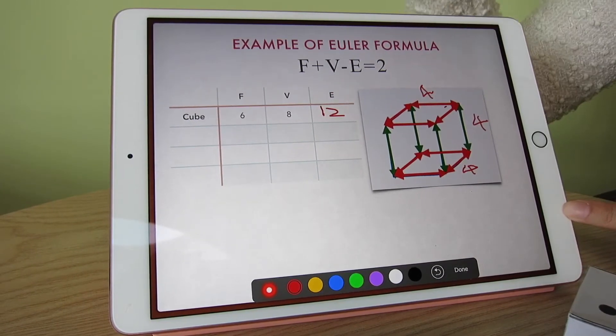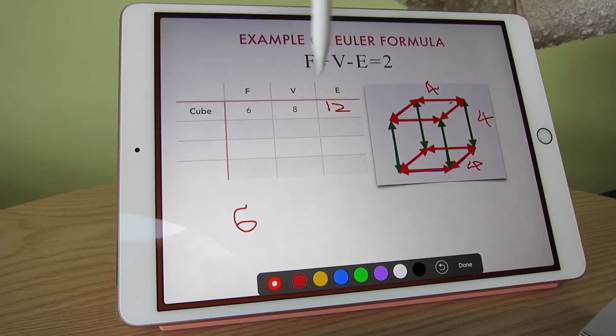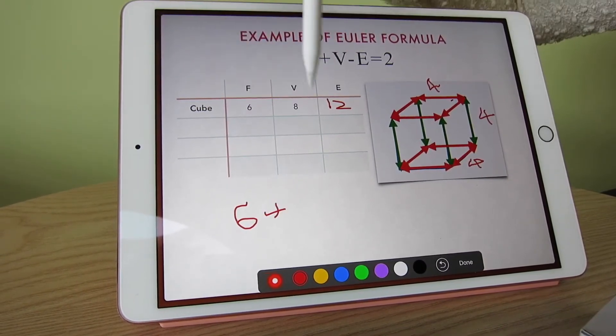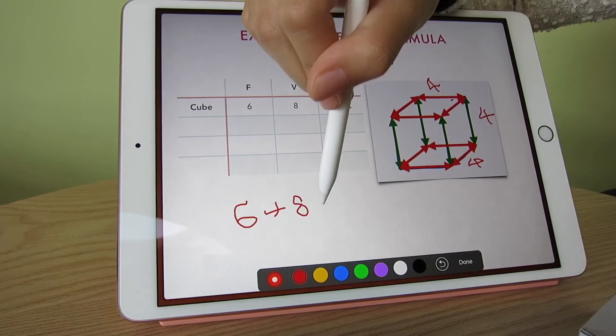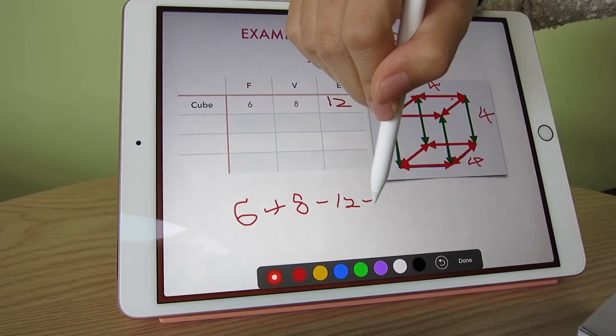This equation will always hold. We have 6, then plus V—so it means 6 plus 8, and then minus the E for 12. This equation will always equal 2.